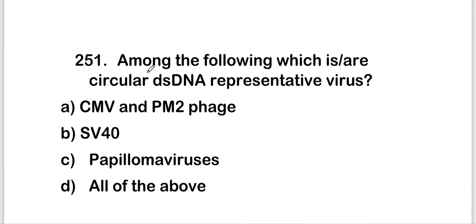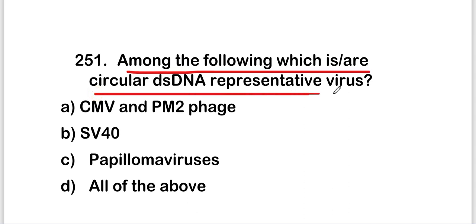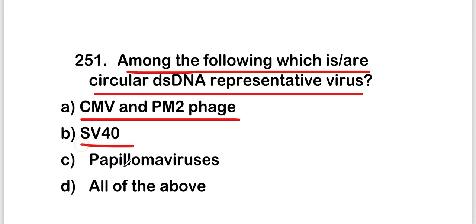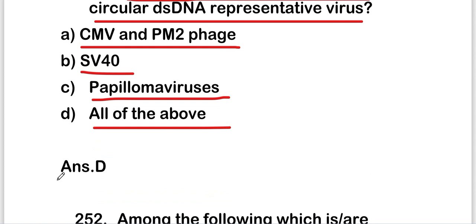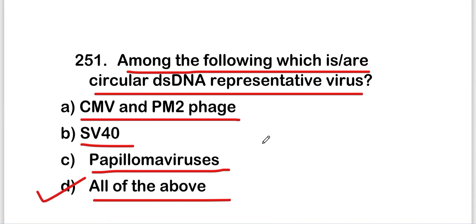The next question: among the following, which is or are circular double-stranded DNA representative viruses? Options are CMV and PM2 phage, SV40, papilloma virus, or all of the above. The right answer is option D — all of the above. All of these viruses are circular double-stranded DNA viruses.